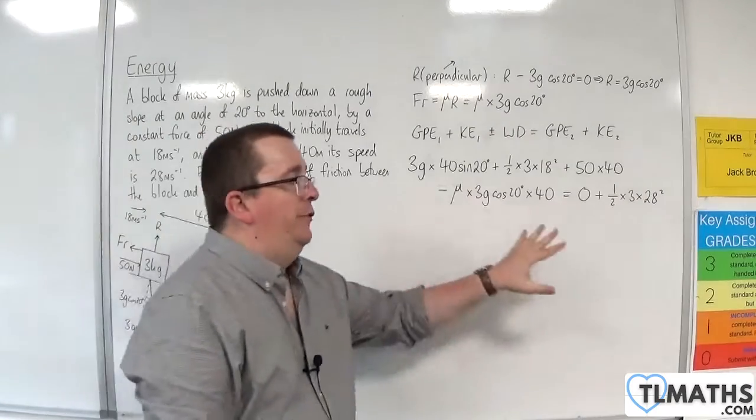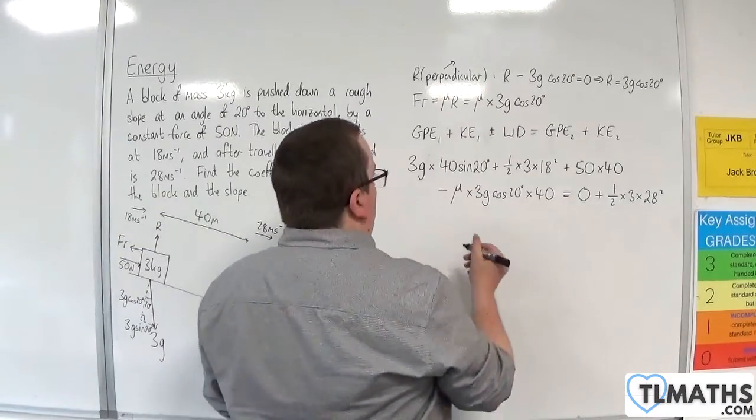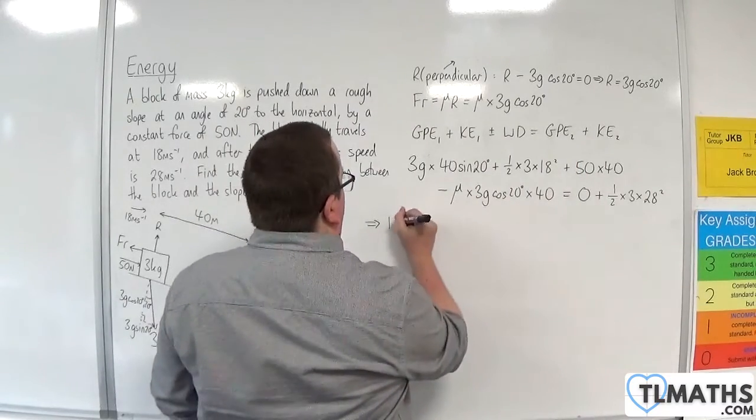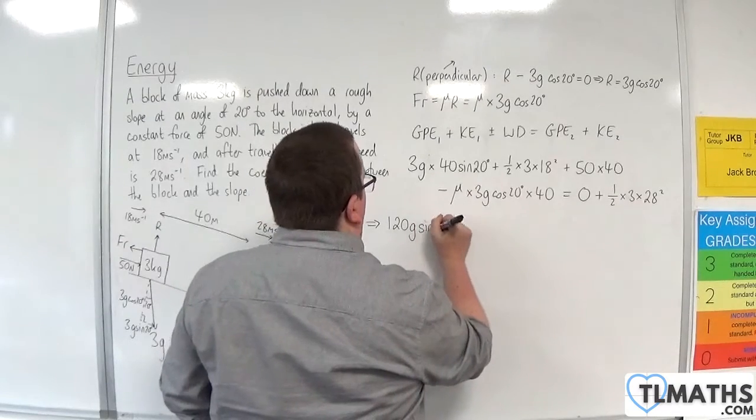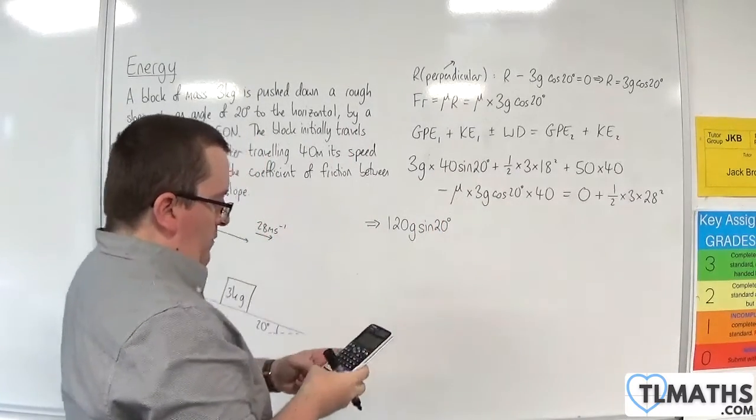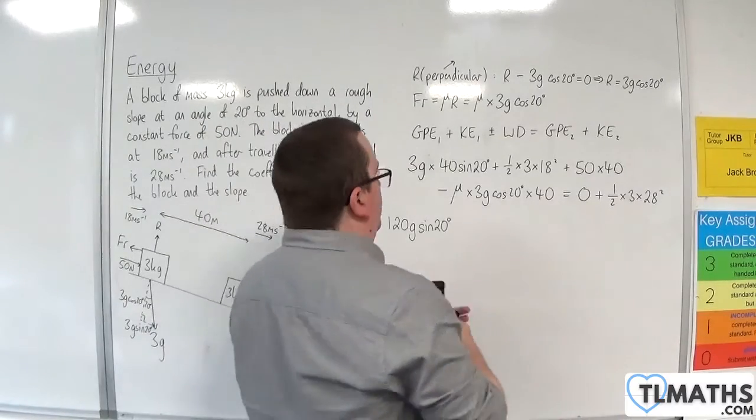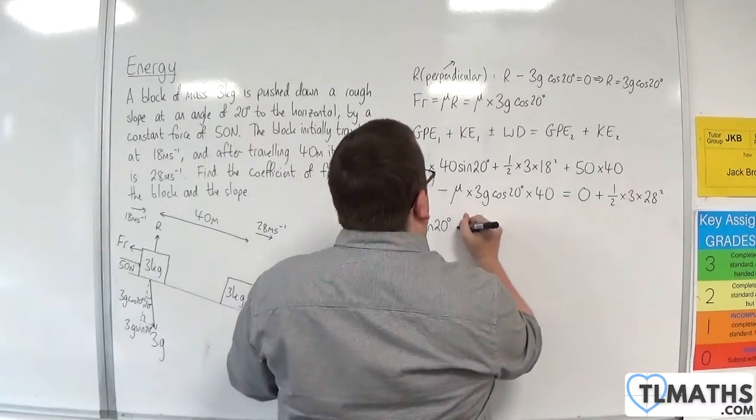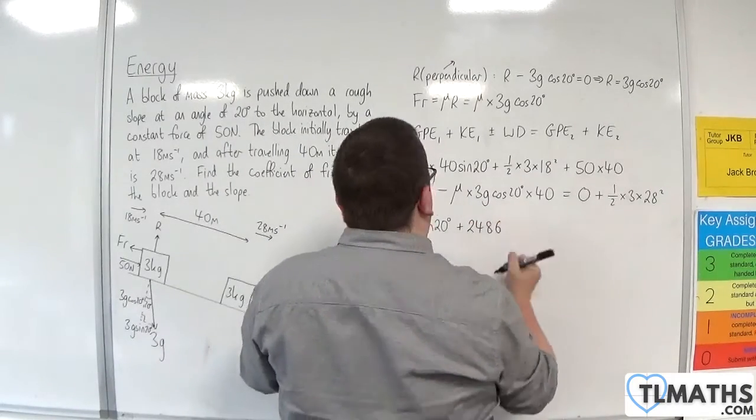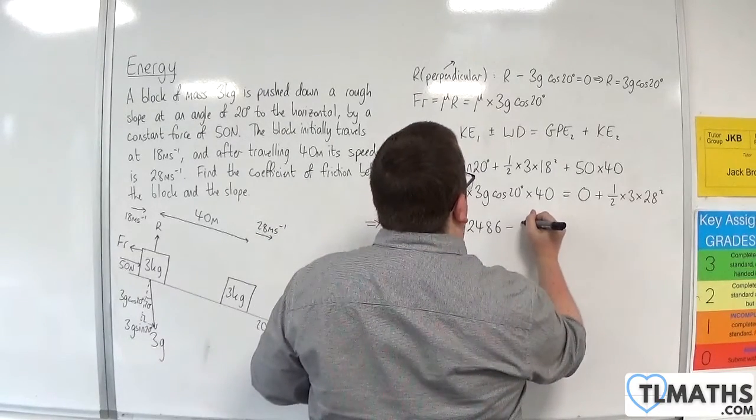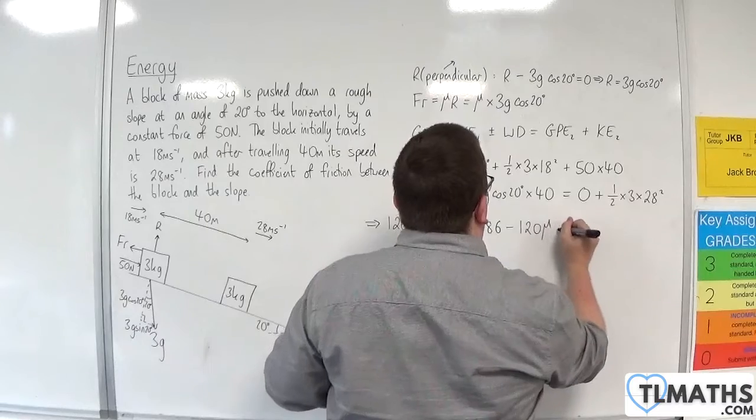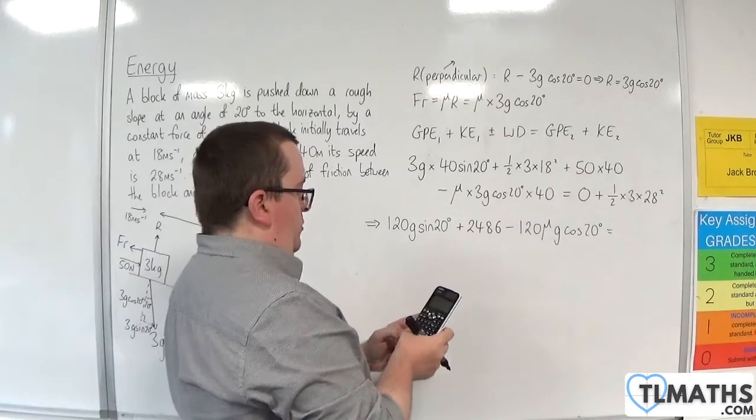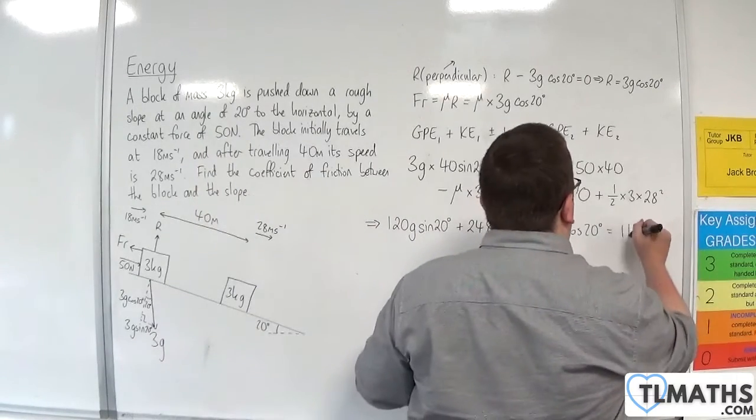So this gives me an equation that I can now solve to find mu. So let's see how I can tidy this up. So we've got 120 G sine 20. 0.5 times 3 times 18 squared is 486. Plus 50 times 40 is 2,486. We've then got, take away, 120 mu G cosine 20. And here we've got 0.5 times 3 times 28 squared, so 1,176.